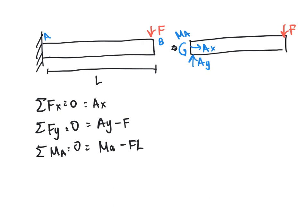And now it's just a matter of solving. Ax equals zero. Ay minus F equals zero, so Ay equals F. And we know that the momentum at A is going to be equal to force times that length. And those are all our answers.